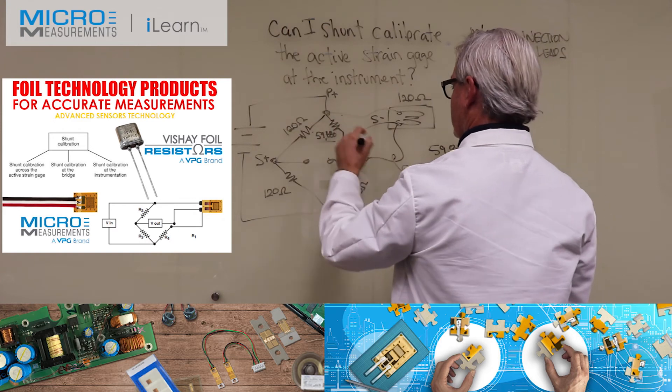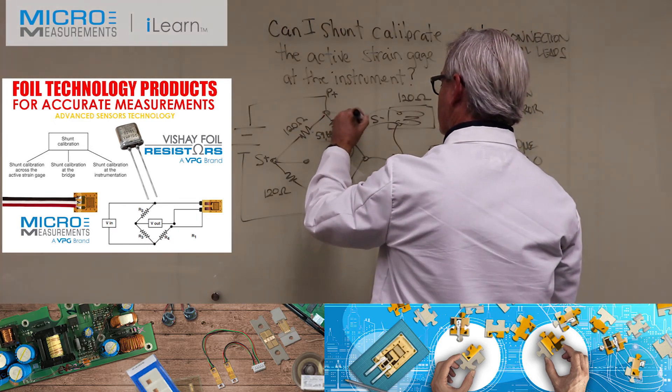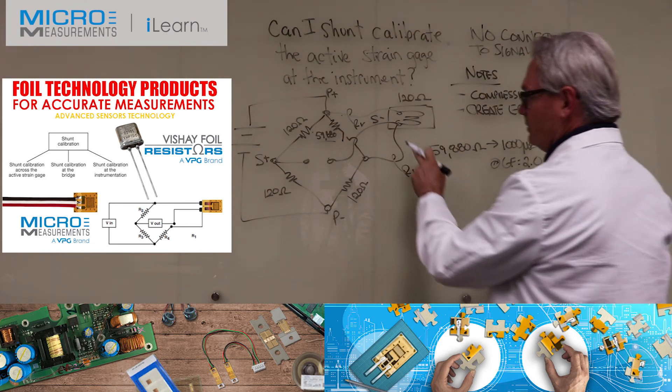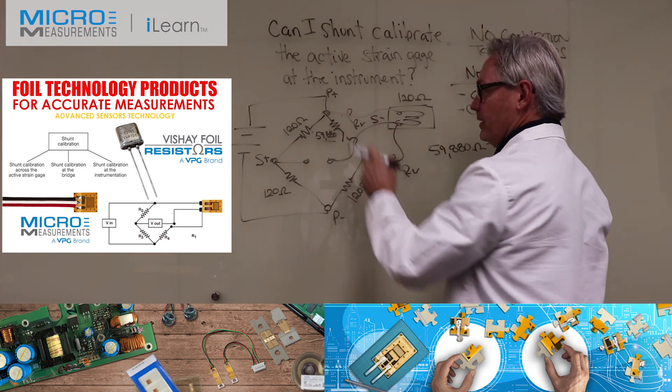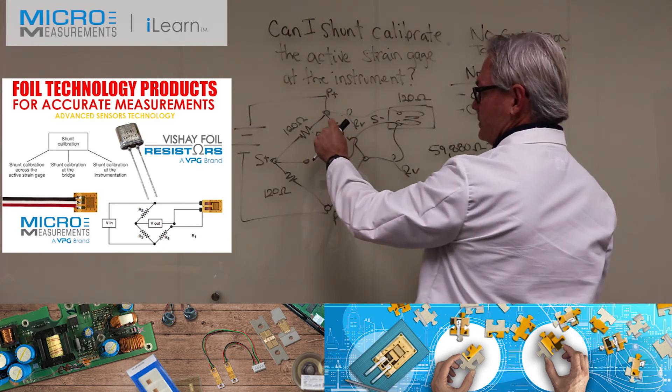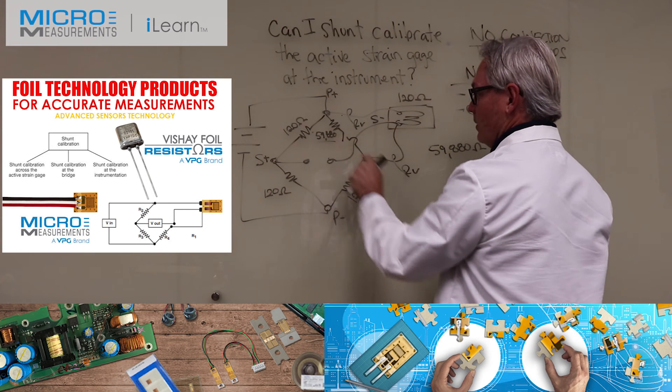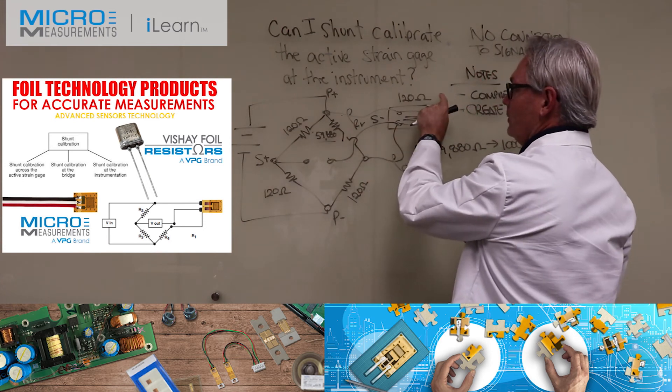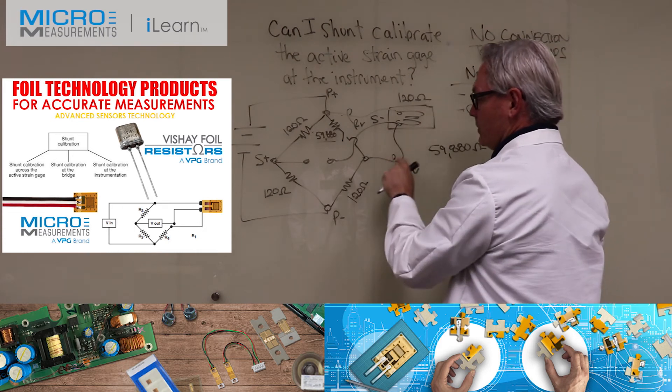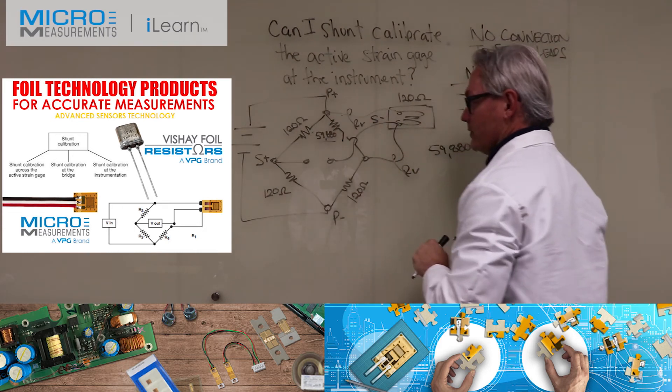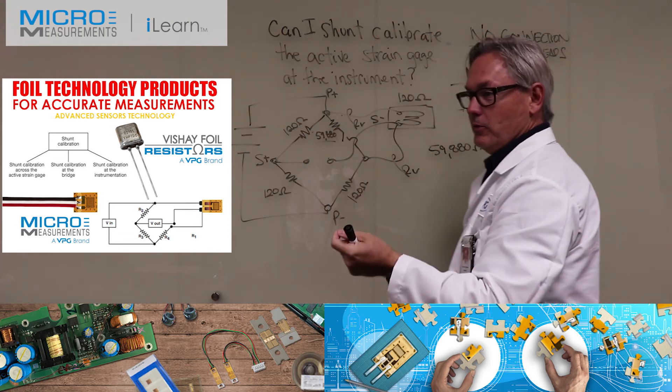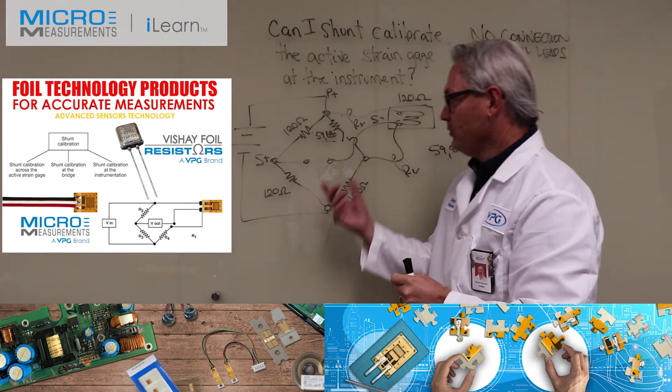The problem is the resistance of these wires. Why is that a problem? Well, the resistance of the wires can vary depending on the length of the wires. And when you take this resistor and you shunt calibrate across these two points, you're not pulling in just the resistance of the gauge that you're shunting, but you're also shunting the resistance of these wires.